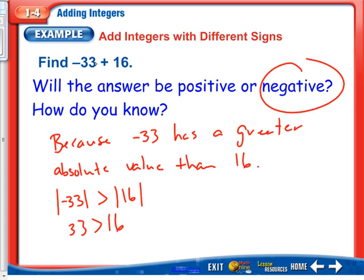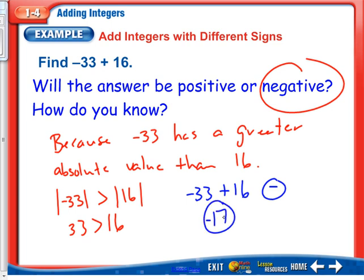Now let's figure out the answer. I owe 33 and I have 16. I know I'm going to still owe, so I put a negative symbol and circle it. I know 16 plus 16 is 32, so we're going to be a little less than 32. My answer is negative 17. If it had been negative 32, then I would have had negative 16, so I knew I had to add one more.